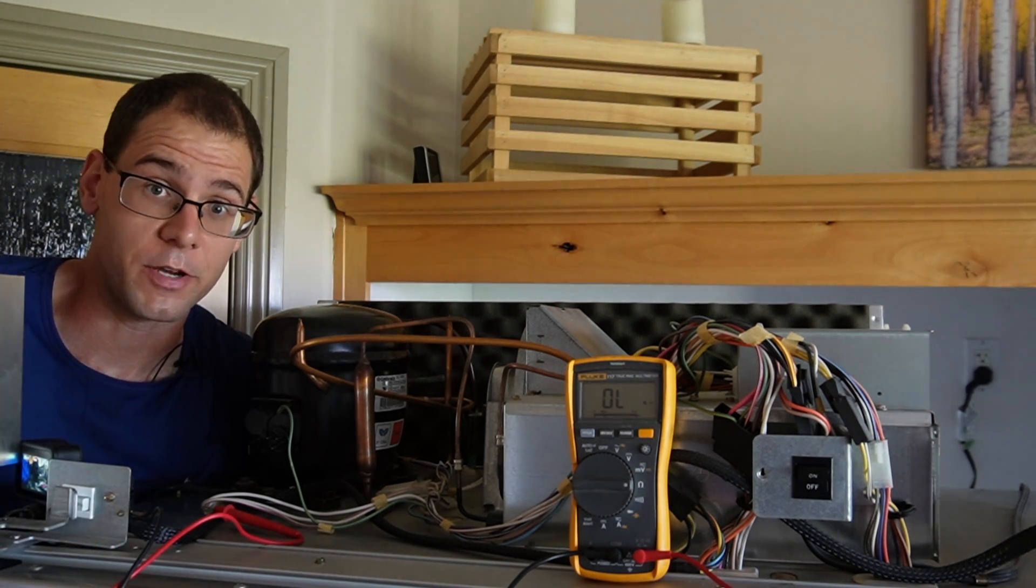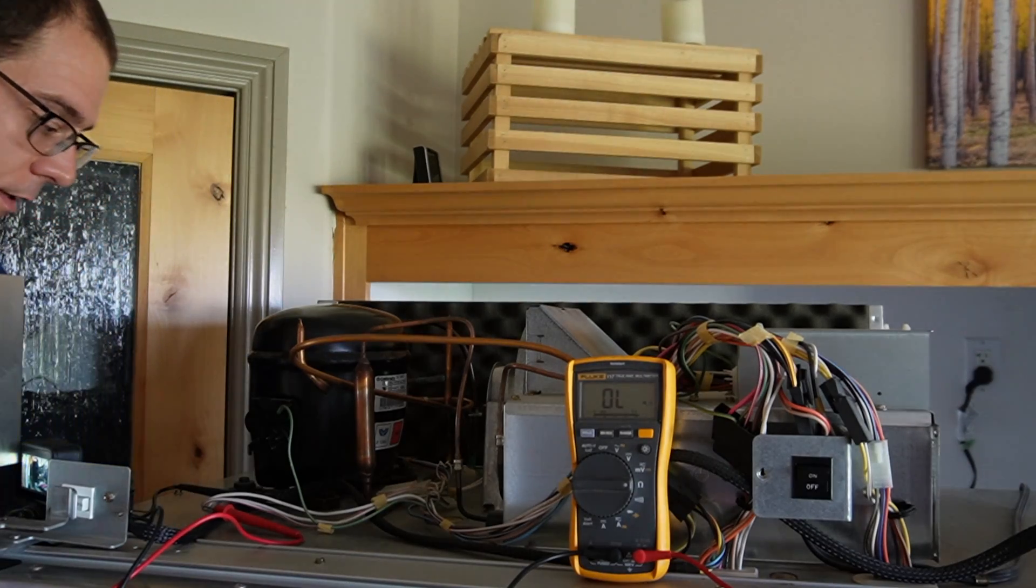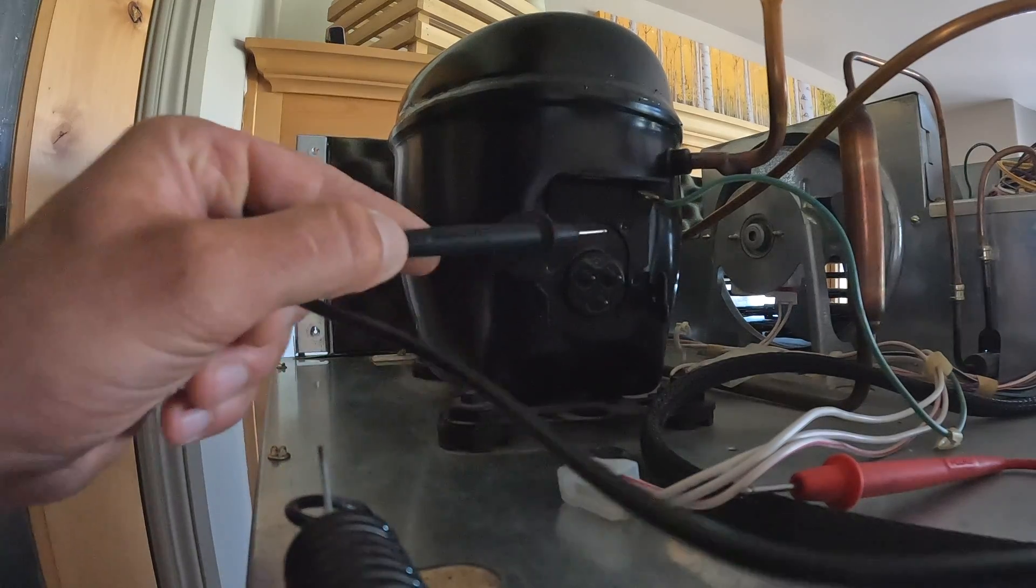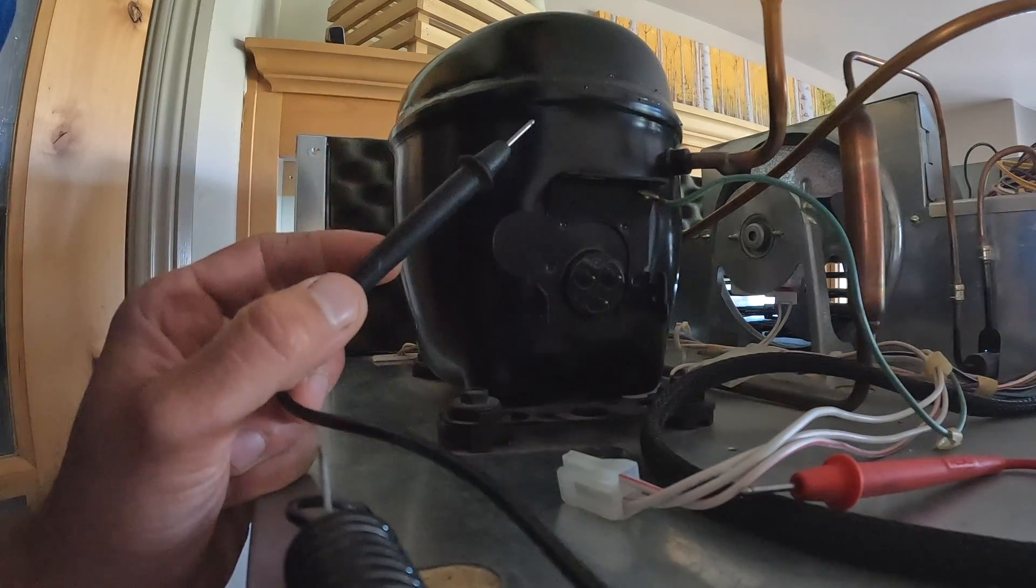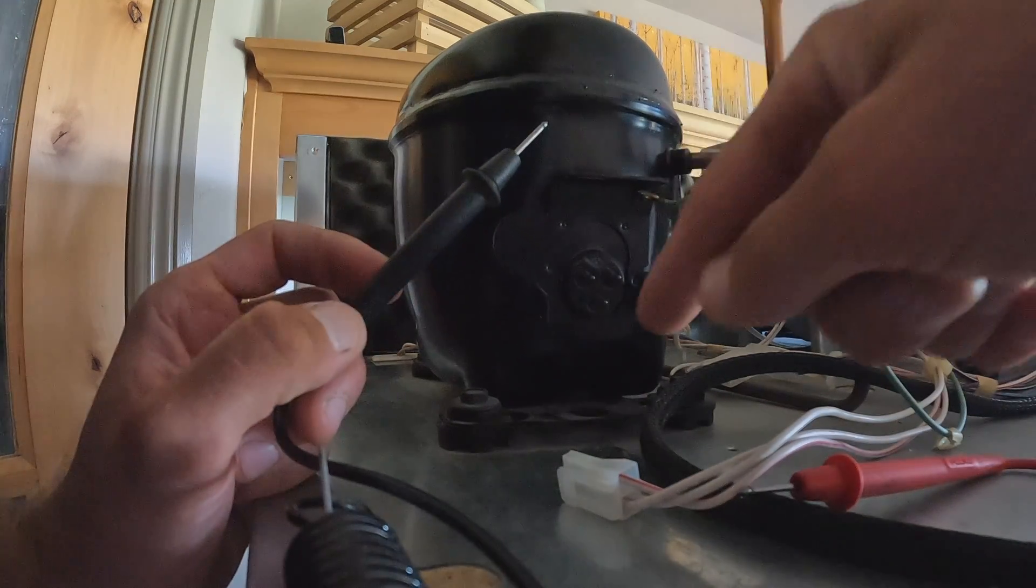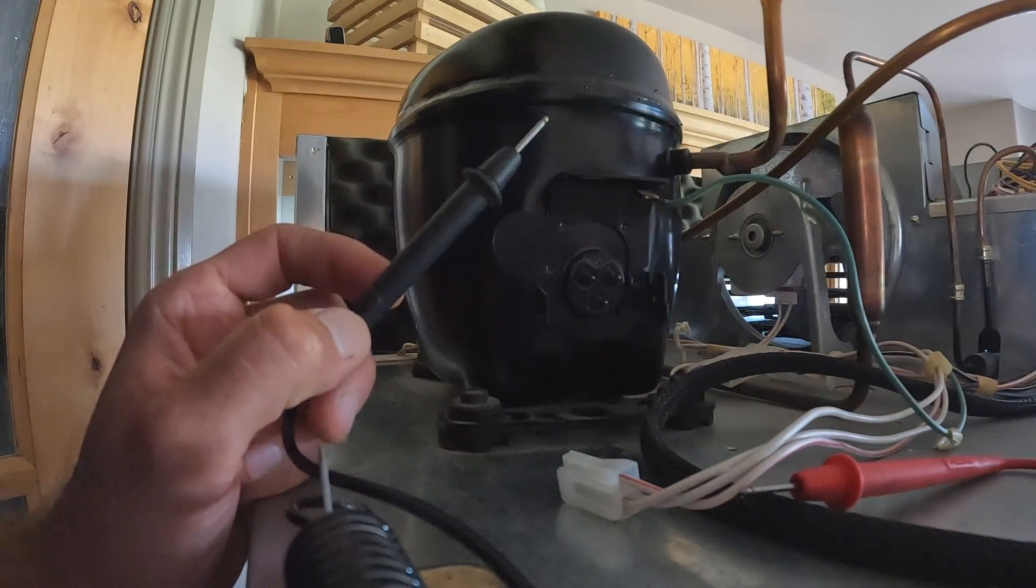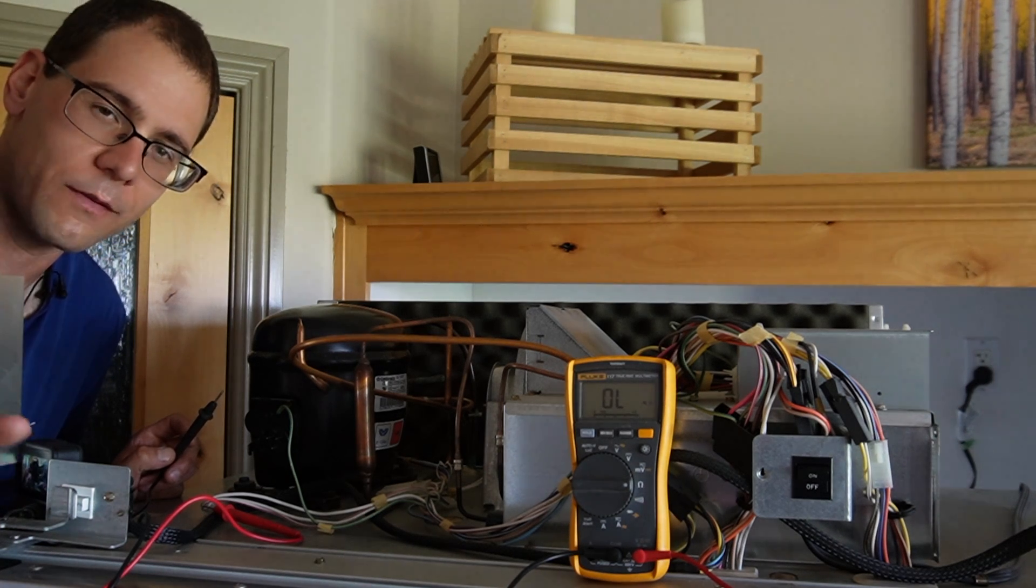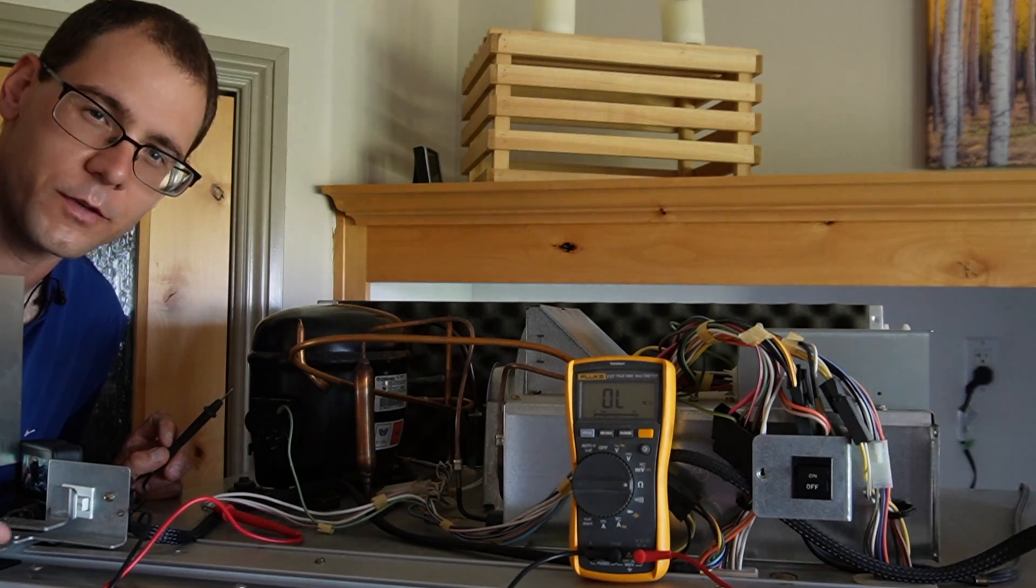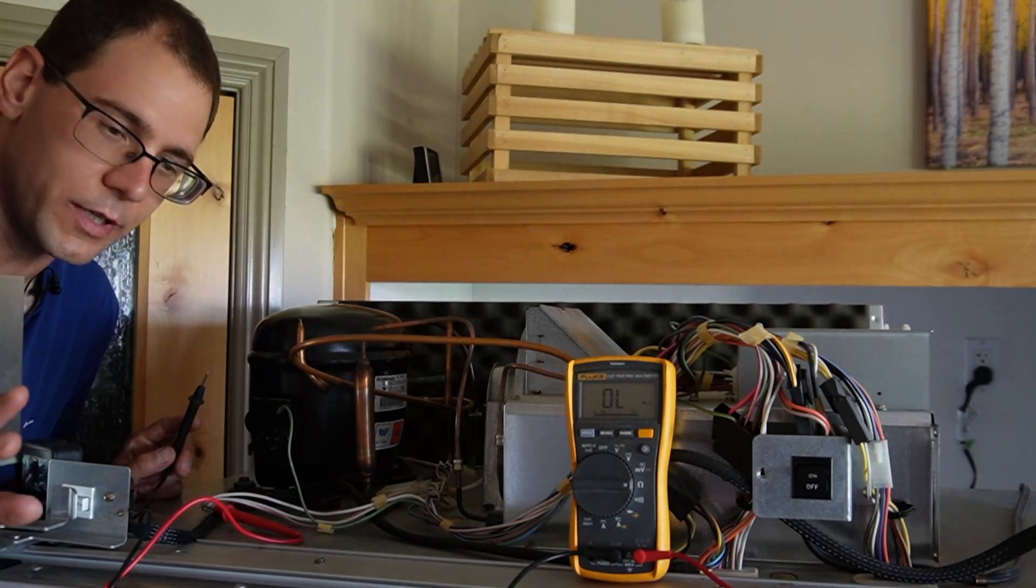I have the multimeter set up in resistance mode so we can take those measurements. Before I do, I want to mention that this Fluke 117 multimeter is a fantastic multimeter. I've had it for many years, it's extremely reliable, never had a problem with it. I'm going to put a link in the description. Let's take those measurements. The bottom terminal is our common. These top two, we have to figure out which is start and which is run by checking resistance between common and each lead. On the start winding we're looking for about 5.9 ohms, and on the run winding about 2.8.